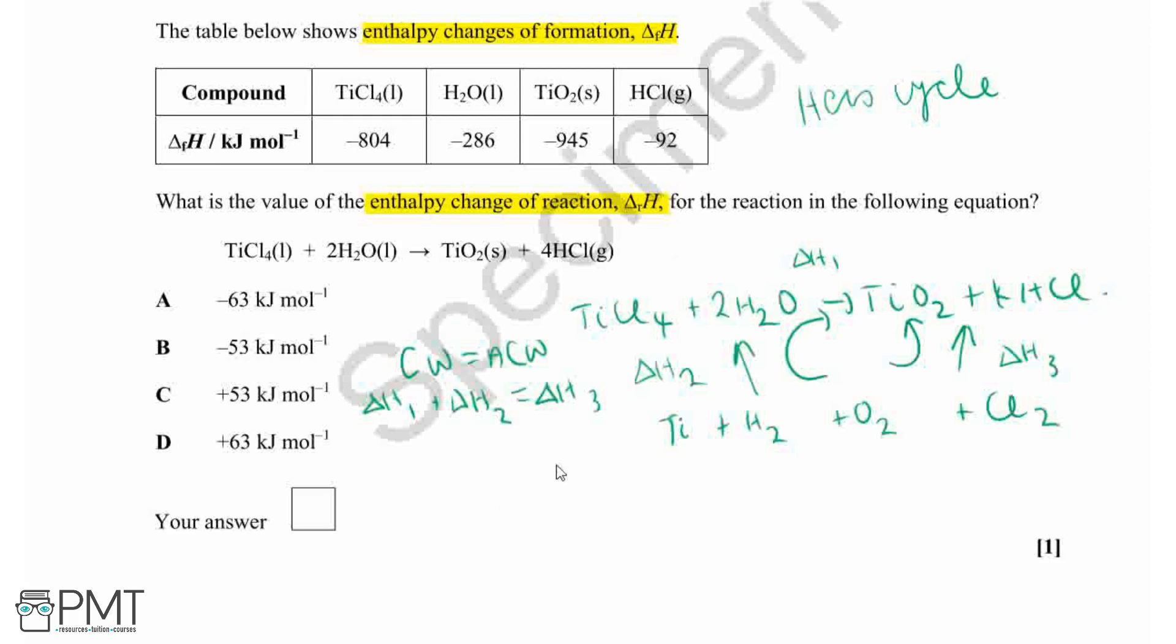We can start to form our equation now. We can work out enthalpy changes two and three from our table and use this to work out what enthalpy change one is, our enthalpy change of reaction. Therefore, we can rearrange our equation for our enthalpy change one.